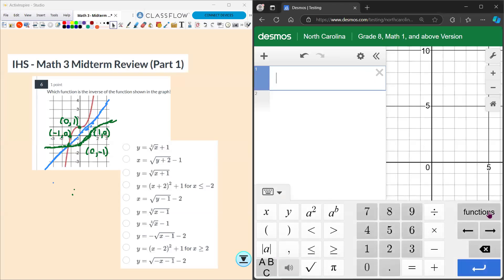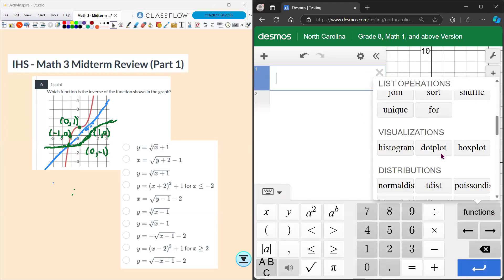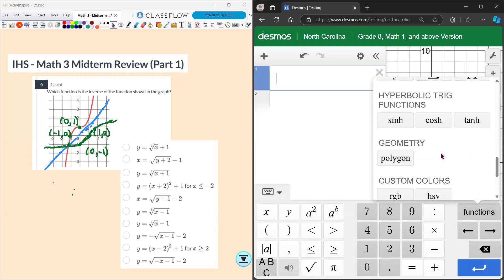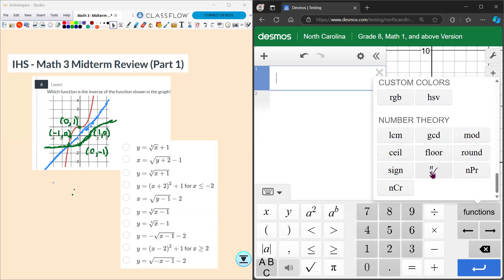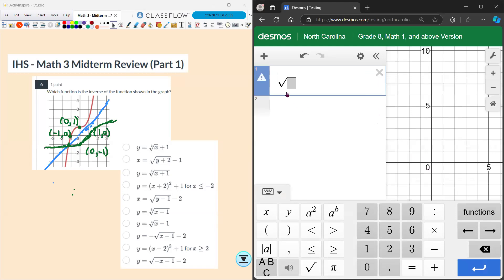Just a quick note to get the cube root. You can actually go into functions and scroll down and you'll see cube root way down here where it has that n with the square root symbol. That way you can put a 3 and you can put x plus 1.